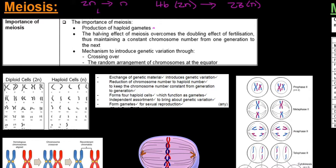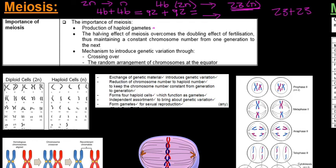If we did not have this halving effect of meiosis, the 46 chromosomes from the male sperm cell fusing with the female egg cell would produce 92 chromosomes. Then next time, those 92 chromosomes of one sperm cell would fuse with 92 chromosomes of another egg cell, giving an even higher chromosome amount. So it's very important that a sperm cell with 23 chromosomes fuses with an egg cell of 23 to give you 46 chromosomes.